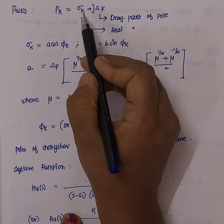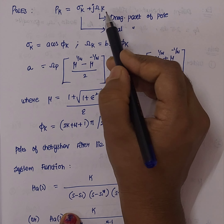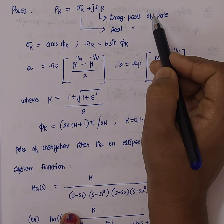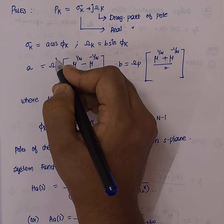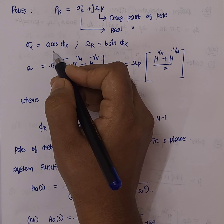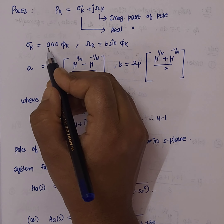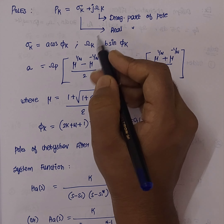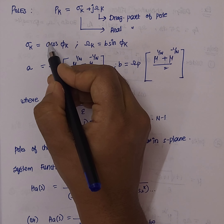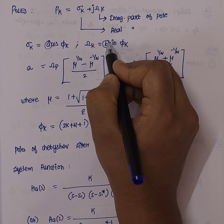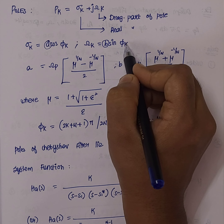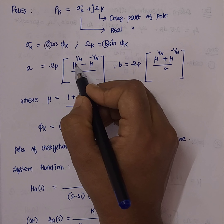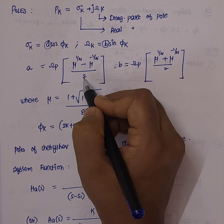We take the pole values as p_k equals sigma_k plus j·omega_k, where sigma_k is the real part and omega_k is the imaginary part of the pole. In the Chebyshev filter, sigma_k equals a·cos(phi_k), and the imaginary portion is b·sin(phi_k). The value a is equal to omega_p times (mu to the power 1/n minus mu to the power minus 1/n) divided by 2.